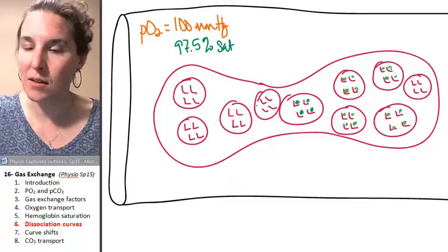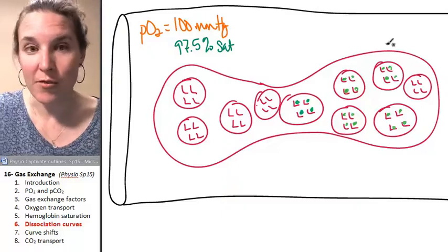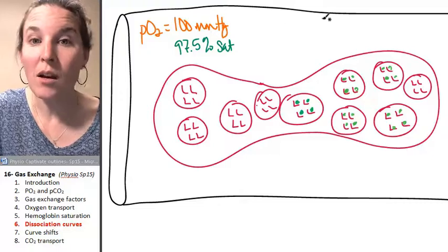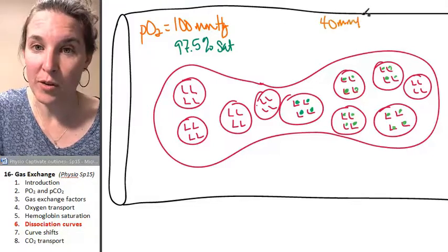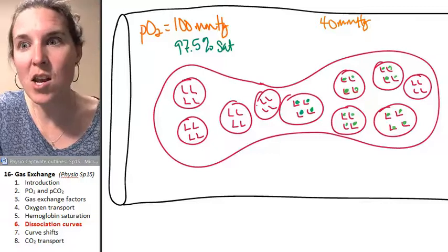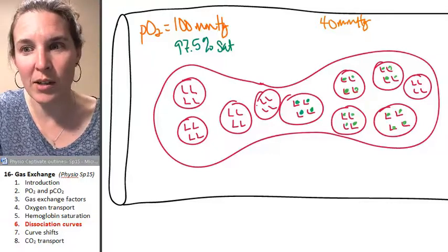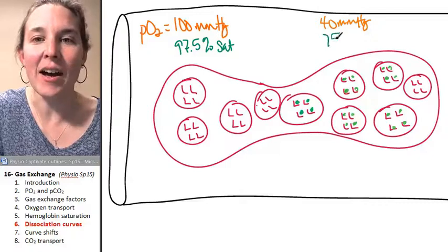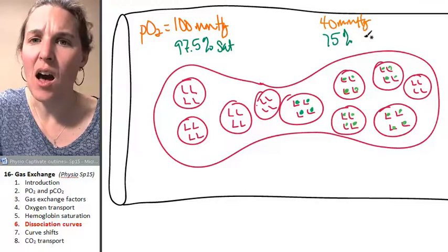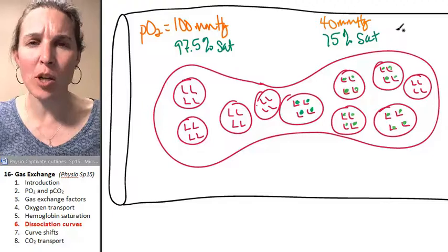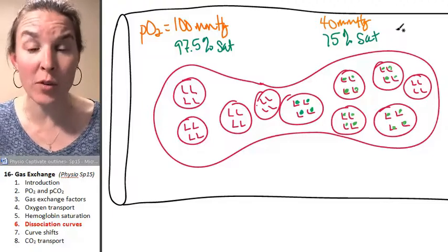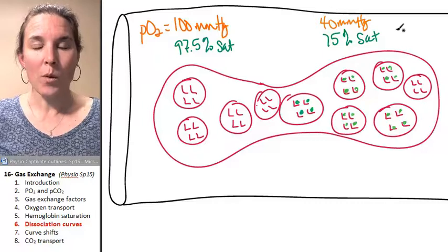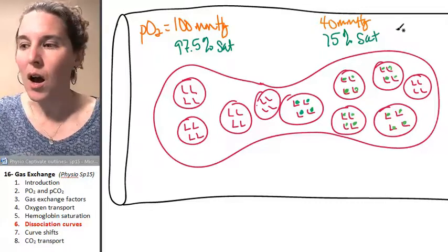But if my partial pressure of oxygen was 40 millimeters of mercury, 75% of my hemoglobin seats are going to be full of oxygen molecules. Seriously? Who cares? I do.